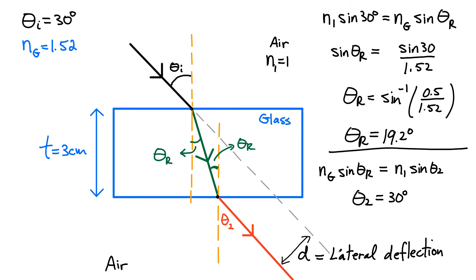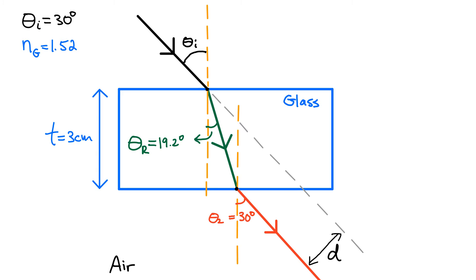We're almost in a position now to start looking at the lateral deflection. Let me clean up the diagram and label some points. I'm going to call the point up here P, the one directly below that Q, the one in the middle R, and this one S. We're going to define some triangles, and it's going to be easier with these labeled points. First I want to find the distance between R and S — how long is that segment?